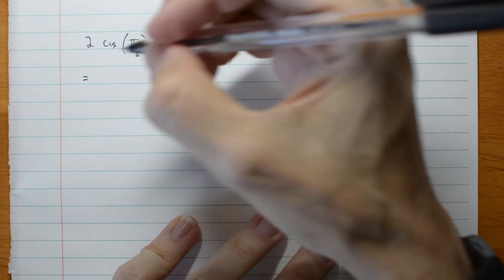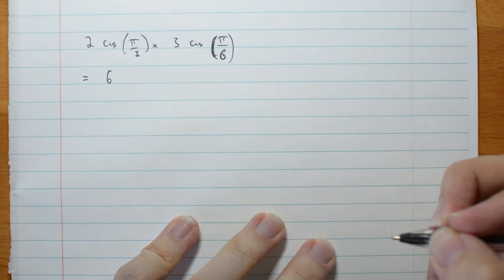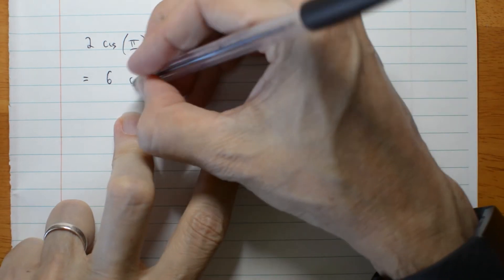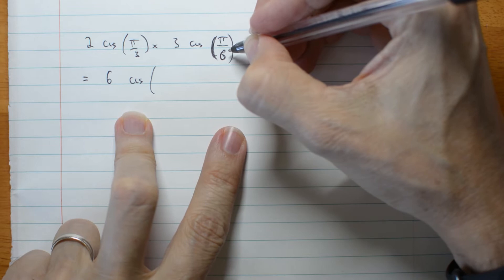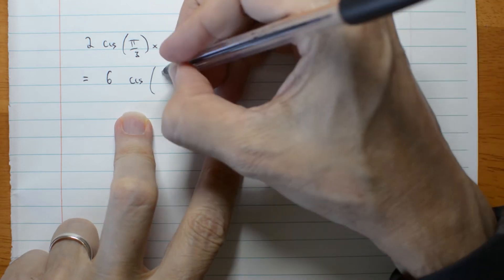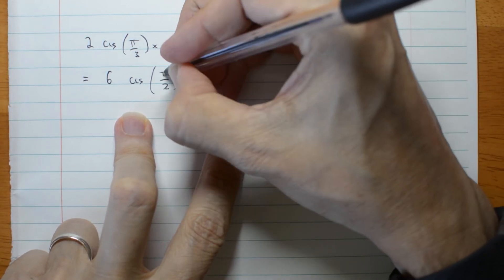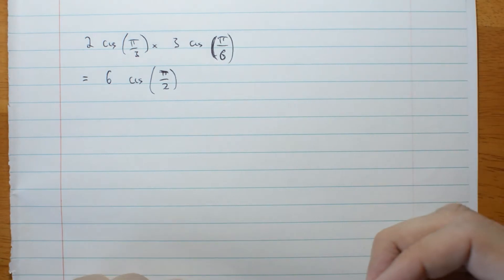Let's multiply the moduluses, moduli. That gives us 6, and add the arguments. What's π/3 plus π/6? That turns out to be π/2. And that's as simple as it gets.